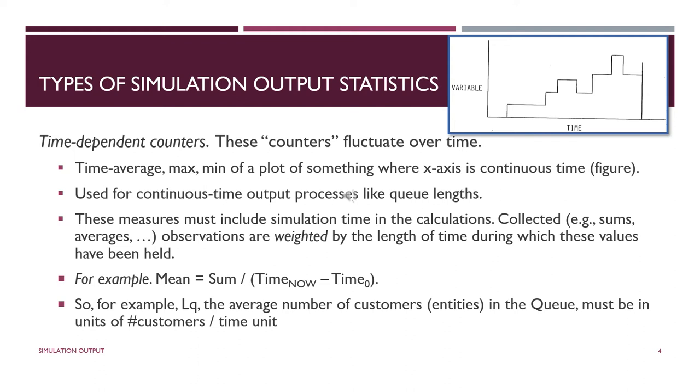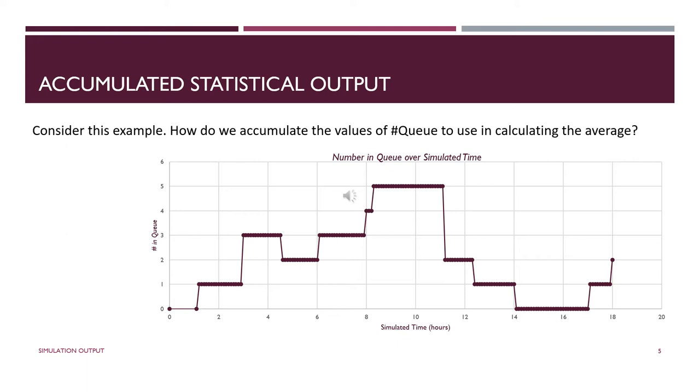This is the example we're going to work with over the next few slides. We want to output the average over the course of the simulation run of the number in the queue—we're designating it as number Q or number in queue. It's the number, on average, of how many people are waiting for service over the course of the simulation run, and it's a time average. Take a look here; might be easier to see because I'm reducing this figure on the next slide. You start out at empty and idle. We go from time zero to time one point something. It'll be more exact later on, but it doesn't even matter right now; I just want to show you.